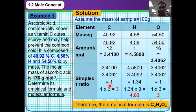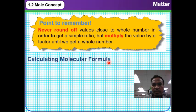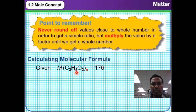Then we calculate the simplest ratio, and after we obtain the simplest ratio, we multiply with a suitable factor so that we get the whole number for each of the moles of each species. From the empirical formula and molar mass of the compound, we can determine the molecular formula.